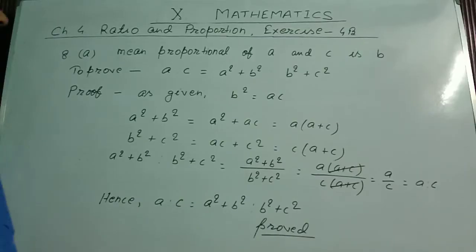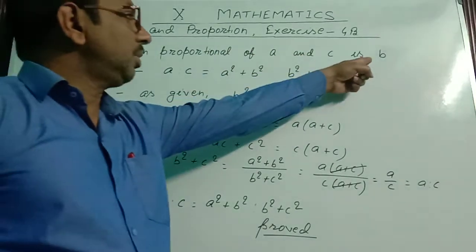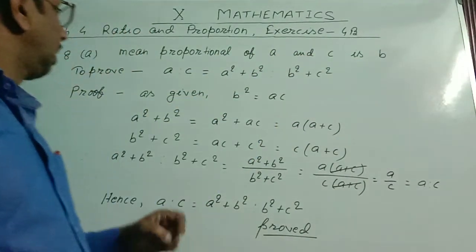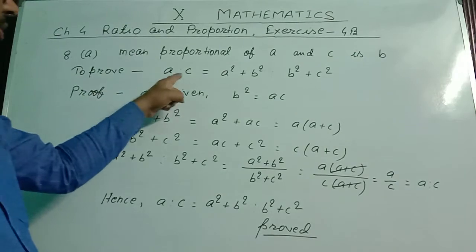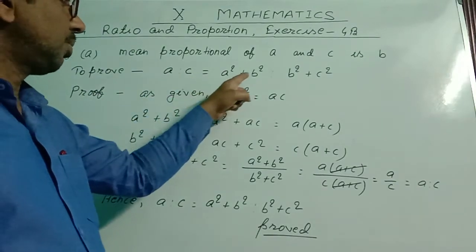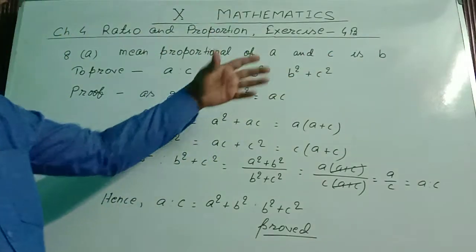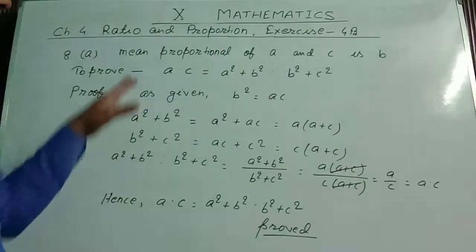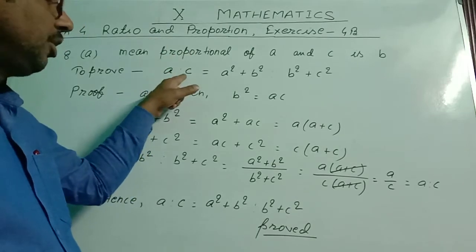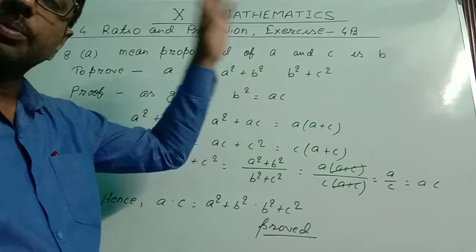In question number 8a, it is given that b is the mean proportional of a and c, and we are asked to prove that a, c, a², b², b², c² — all these four quantities are proportional. If these four quantities are proportional, then we can write a : c = (a² + b²) : (b² + c²).